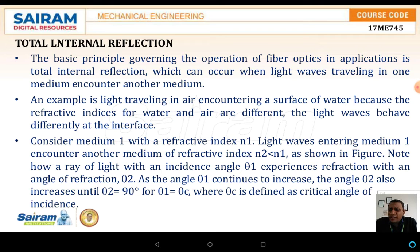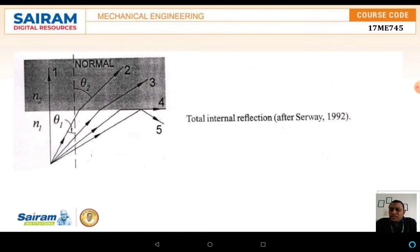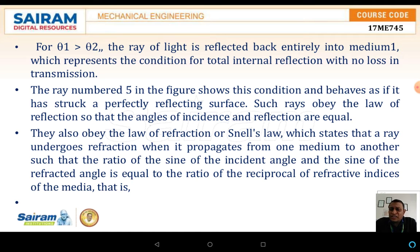Considering medium one and medium two, the refractive index of medium one is n1. A light wave entering medium one encounters another medium with refractive index n2, where n2 is always less than n1. The schematic diagram shows how total internal reflection takes place with respect to the angle. When theta 1 is greater than theta 2, the ray of light is reflected back entirely into medium one, representing the condition of total internal reflection with no loss in transmission.